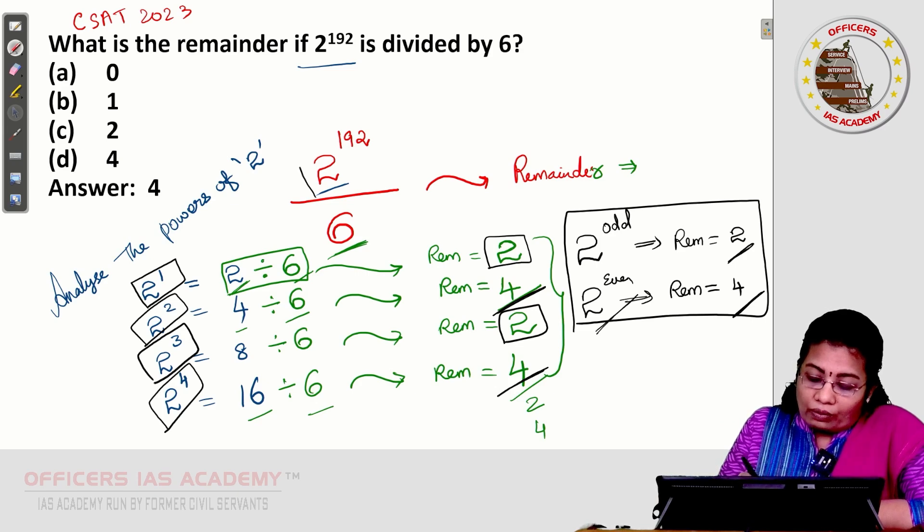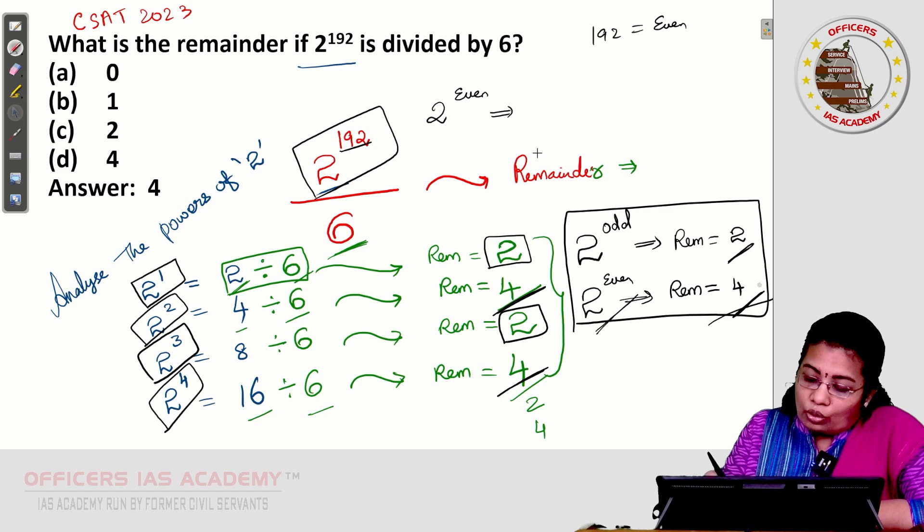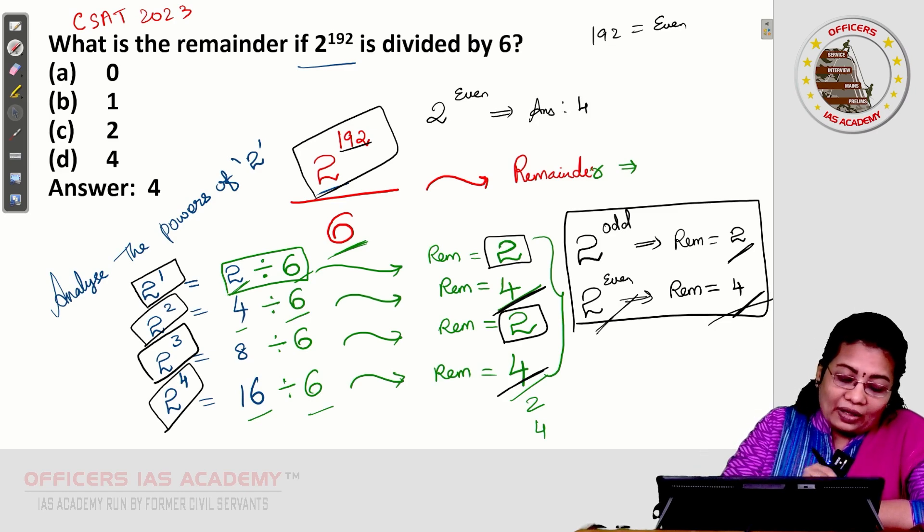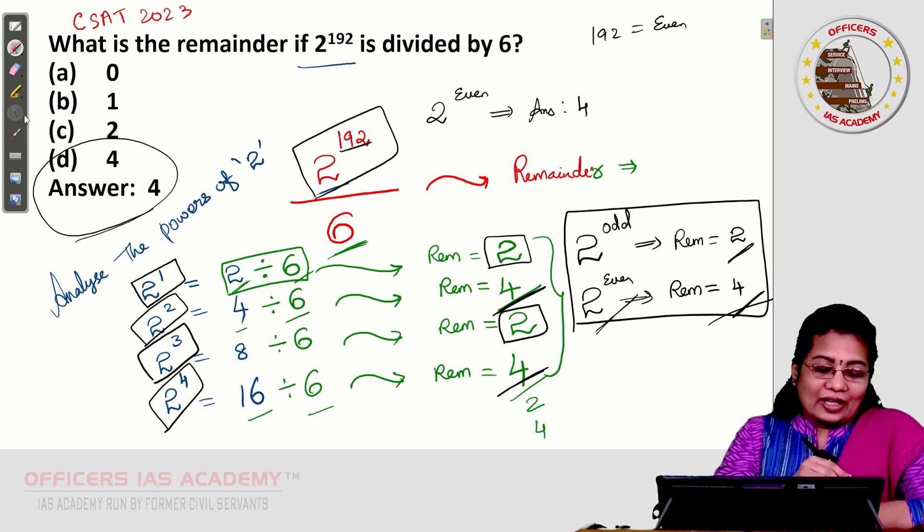Finally, what is the question? 2 power even number. 192 is what kind of number? It is even number. 2 power even means answer is going to be 4. The previous CSAT question can be easily correct. The answer is 4.